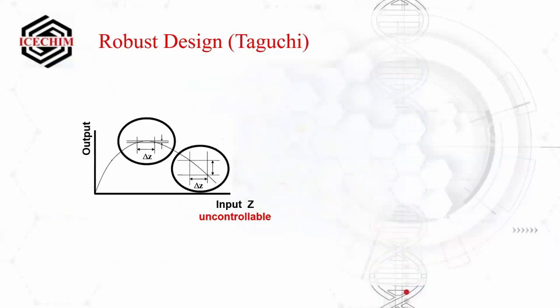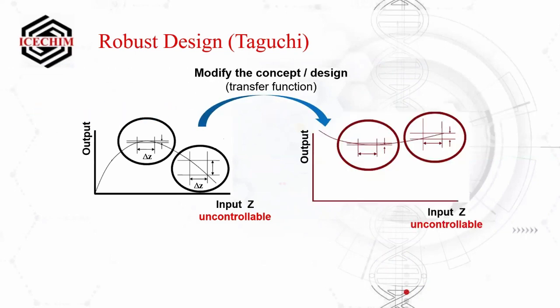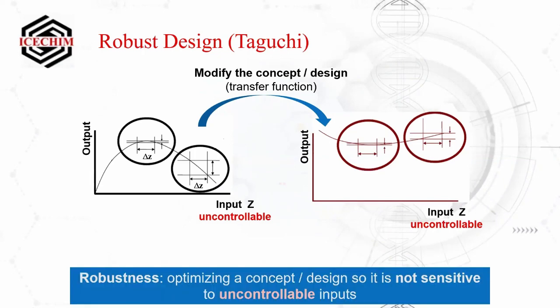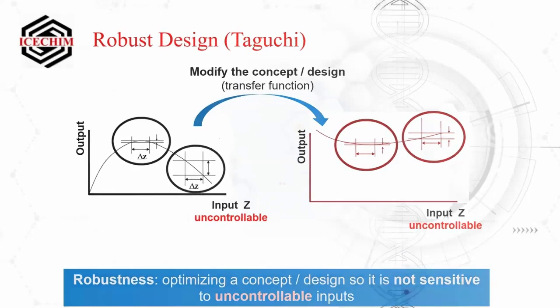We can derive a so-called robust design by Taguchi. Here you see that uncontrollable inputs — let's say temperature — can provoke a huge output swing, which leads to many defects. This should be addressed from the beginning: to make this dependence as flat as possible. That is robustness — robust design. It means minimizing the effect of uncontrollable inputs on the output, i.e., reducing defects. A defect means failure on the market.